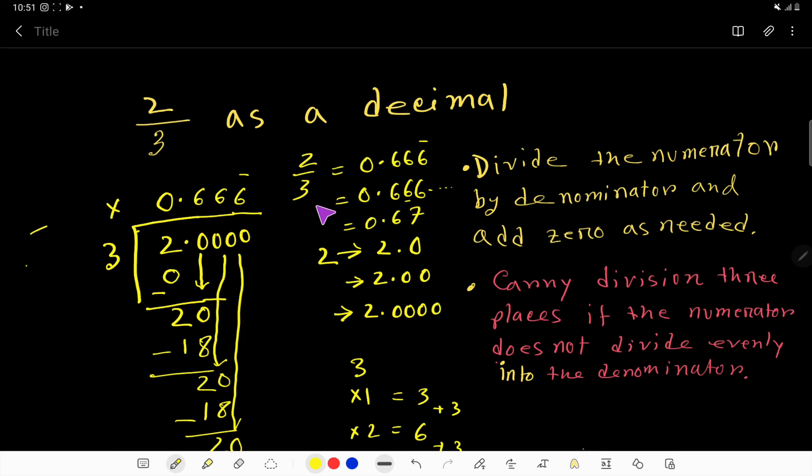So, 2 by 3 as a decimal is 0.66 bar or 0.67.